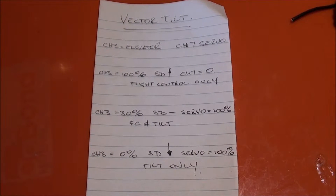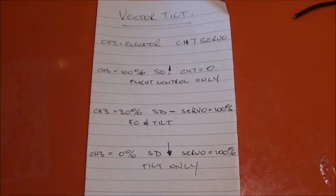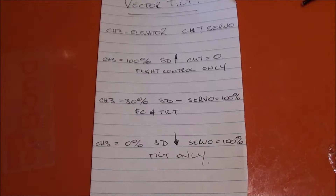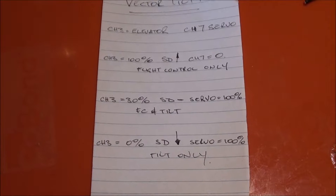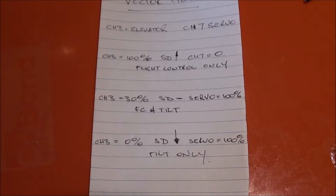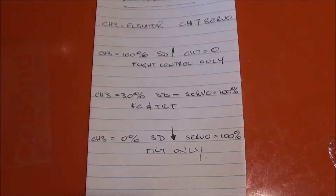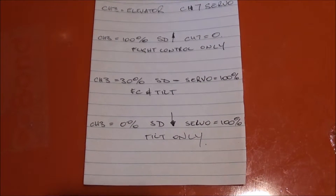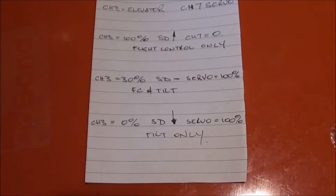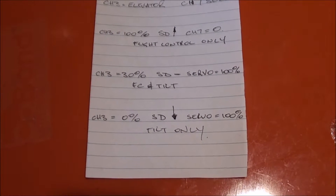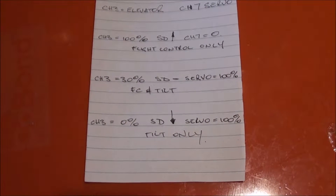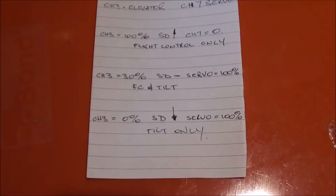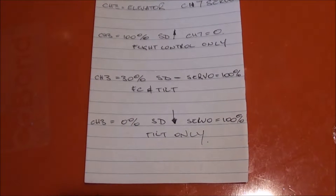Here's what we've got for our vector quad. Channel 3 is our elevator, channel 7 is our servo. When channel 3 is at 100% and SD is in the up position, the servo is at zero, which gives you flight controller only. When SD is in the center, channel 3 is 30% and servo is 100%, so you've got the flight controller and tilt. When SD is in the lower position, channel 3 is zero and your servo is 100%, so you've got tilt only.